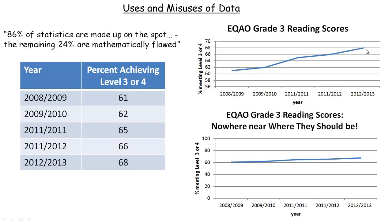It really looks like the percentage is increasing rather significantly because the slope looks fairly steep. It actually is a 7 percentage point increase, from 61 to 68. The bottom graph is meant to show a different picture — using a scale from 0 to 100, which is usually preferable. The headline reads 'EQAO grade 3 reading scores: nowhere near where they should be,' and it looks like they're almost flatlining. The same data is shown in both; only the vertical scale has been changed to influence the reader.